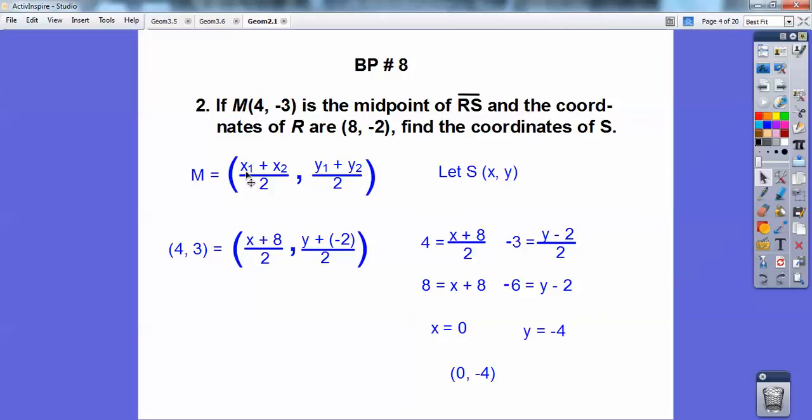And then use your midpoint formula, x1 plus x2 over 2, y1 plus y2 over 2. So this midpoint is this 4, -3. So I put that right there. And then I just added this x plus this x over 2, and then this y plus this y over 2.